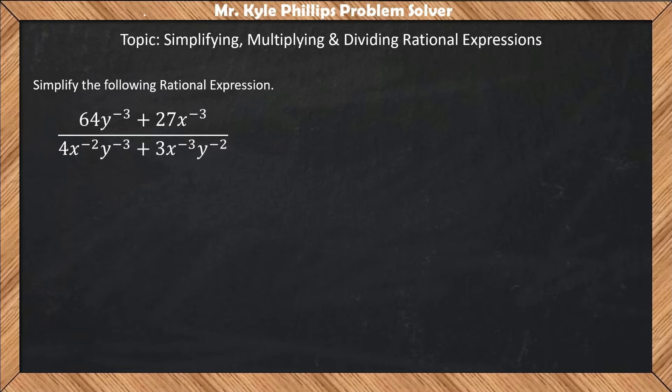The problem with this that you can't do is that this is 64y^(-3) plus 27x^(-3). When you're multiplying or dividing, a move like that is okay. But when you're adding or subtracting, you would have to move the entire binomial. So this is not something we're going to want to do.